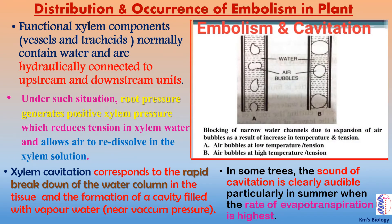Let us discuss about the distribution and occurrence of embolism in plants. Functional xylem components — that means vessels and tracheids — normally contain water and are hydraulically connected to upstream and downstream units. Under such situations, root pressure generates positive xylem pressure, which reduces tension in xylem water and allows air to re-dissolve in the xylem solution. Xylem cavitation corresponds to the rapid breakdown of the water column in the tissue and the formation of a cavity filled with vapor water, that means near vacuum pressure. In some trees, the sound of cavitation is clearly audible, particularly in summer when the rate of evapotranspiration is highest.